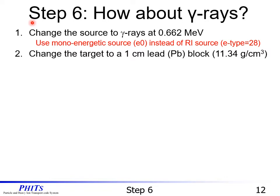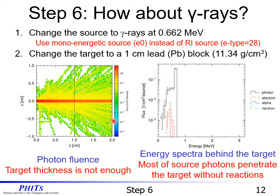Let's go on to Step 6: how about gamma rays? First, please change the source to gamma rays at 0.662 MeV. We should use a mono-energetic source (E0) instead of the RI source (E-type equal to 28). Also, change the target to a 1 centimeter lead (Pb) block. The density is 11.34 g/cm³. From the photon fluence in the left figure, we find that the target thickness is not enough. From the energy spectra behind the target in the right figure, we find that most source photons penetrate the target without reactions.